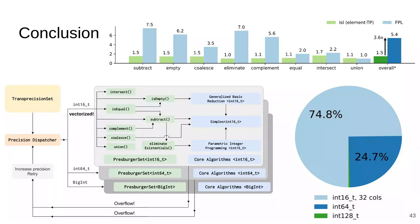In conclusion, we saw FPL, which uses transprecision computing and vectorization to accelerate Pressburger arithmetic on polyhedral workloads. We saw that transprecision computing is highly applicable to polyhedral compilation and that we achieve a speedup of 5.4x over ISL in its default configuration. Thank you.